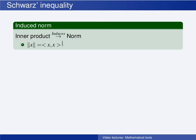The inner product is a stronger topological structure than the norm and the metric, because if a set has an inner product, then this inner product also gives the set a norm, which again induces a metric, as we have seen earlier. We find this induced norm by taking the inner product of the element with itself, and then taking the square root.